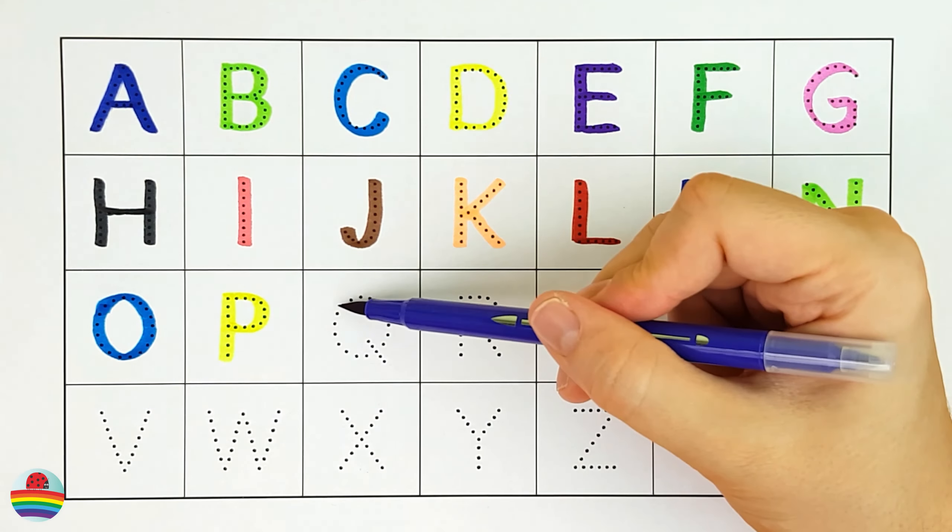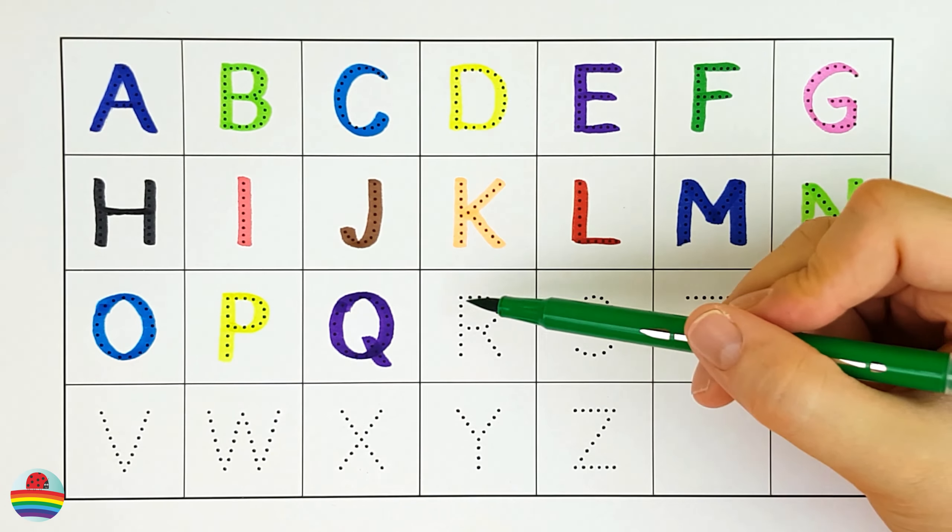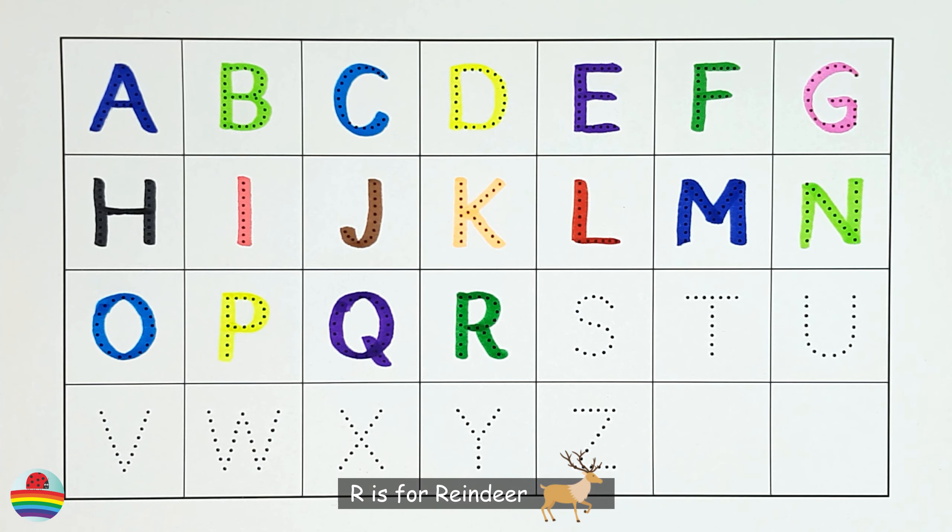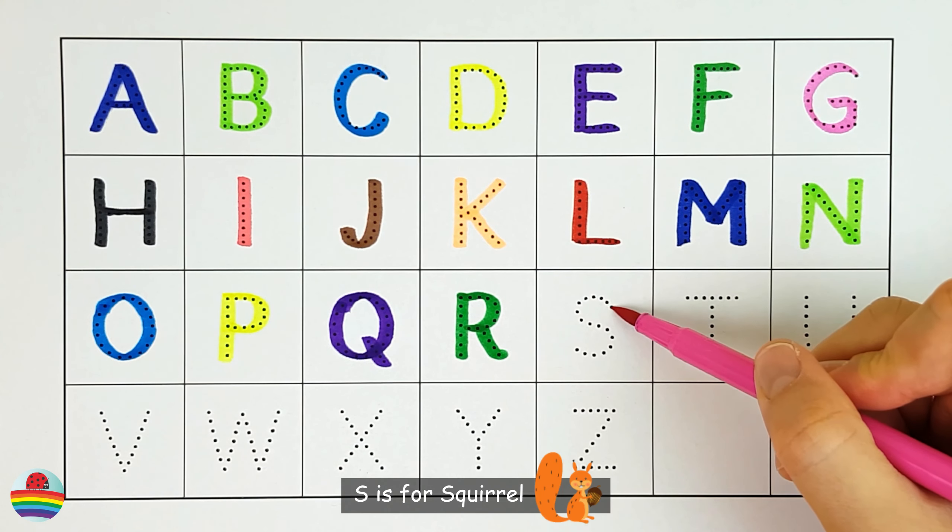Q. Q is for quokka. Q. R. R is for reindeer. R.